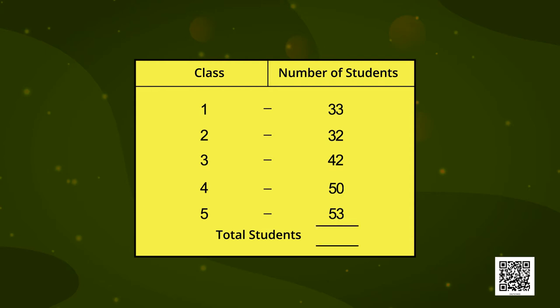So students, tell me how many students in all are going. Take your notebooks and find out how many students are going on the trip. Let me help you. Class 1 had 33, Class 2 had 32, Class 3 had 42, Class 4 had 50, and Class 5 had 53 students. Let's add them. First we will add the digits at the unit place.